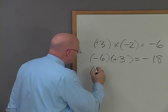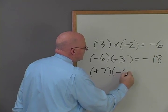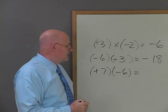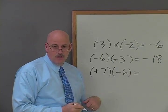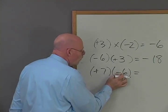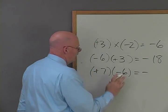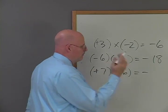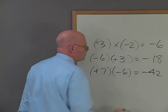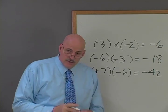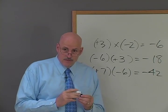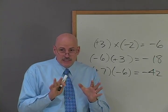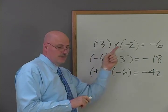Let's try another one: positive seven times negative six. Is it going to be a positive or negative answer? Negative, because it's got one negative symbol. Now forget the signs and just say, what's seven times six? 42. Very good — that's a hard multiplication problem. This is pretty simple because you can relate it to addition.